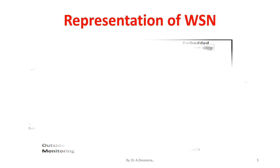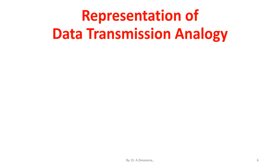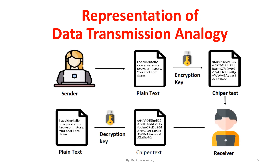Here is a representation of a wireless sensor network, and here is a representation of a data transmission analogy. In this representation, the sender sends the plain text. With the help of the encryption key, the plain text is converted into the form of cipher text. The cipher text is received by the receiver, and with the help of the decryption key, the receiver converts it back into the original information in the form of plain text.